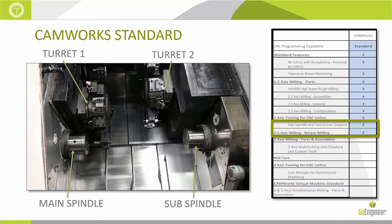Moving on, we have CAMWorks Standard — the first CAMWorks package — which adds sub-spindle and two-turret support, as well as two and a half axis milling and rotary milling, highlighted in the green box. When we talk about sub-spindle and two-turret support, here's a picture of a more advanced lathe with two turrets — which hold the tools and rotate to present different tools at different stages — and two spindles: a main spindle and a sub-spindle. You can have different parts in each spindle, or one part handed off between the two to cut different aspects of it.